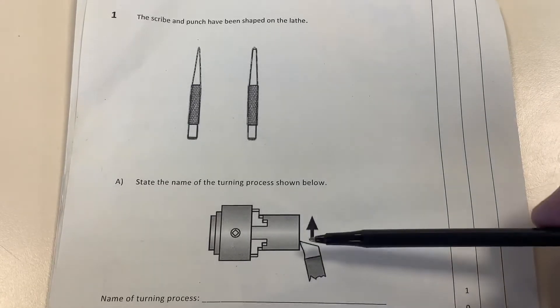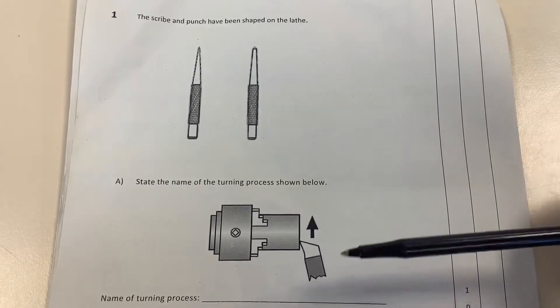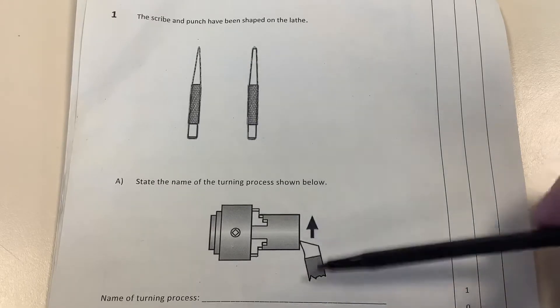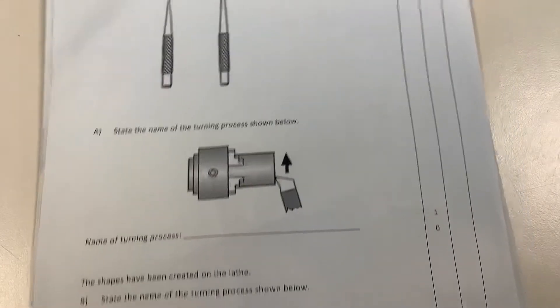It says name the turning process, one mark. With the direction arrow showing you the direction of travel of the cutter, this is facing off. Facing off is used to clean off the end of the bar before doing any other processes.